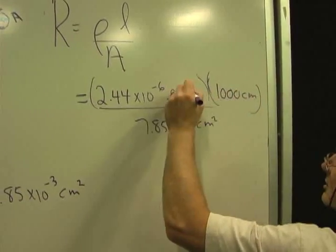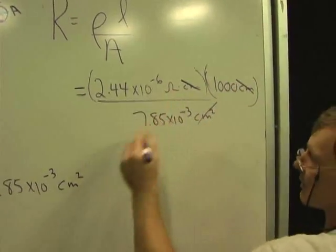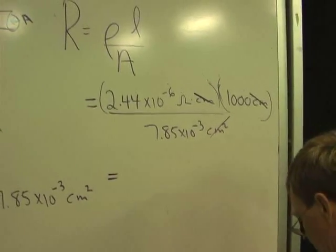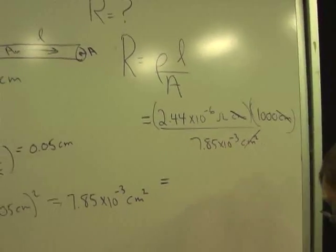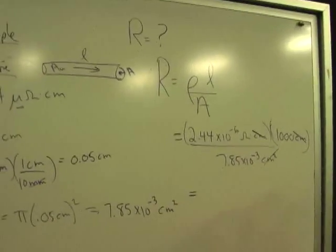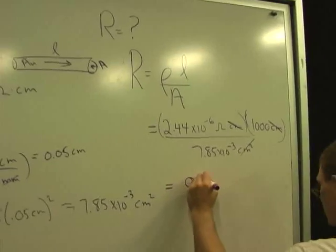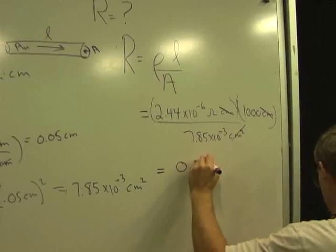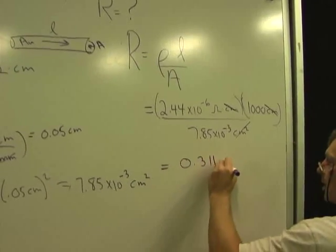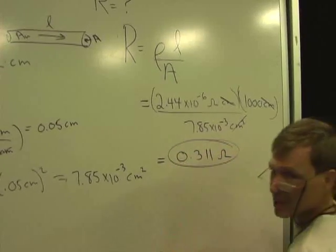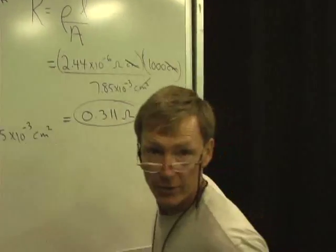Centimeters times centimeters is centimeters squared. Cancels with these. I'll have ohms. And that's going to be 0.311 ohms, less than a third of an ohm.